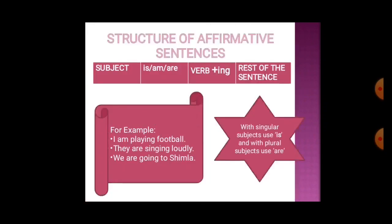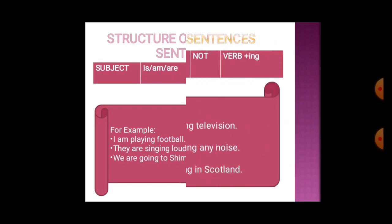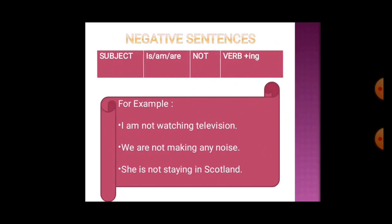Now the structure of affirmative sentences in present continuous tense: subject, then 'is', 'am', or 'are' as auxiliary verb, then verb plus '-ing' (present participle), then rest of the sentence. For example: I am playing football; they are singing loudly; we are going to Shimla. With singular subjects we use 'is', and with plural subjects we use 'are'.